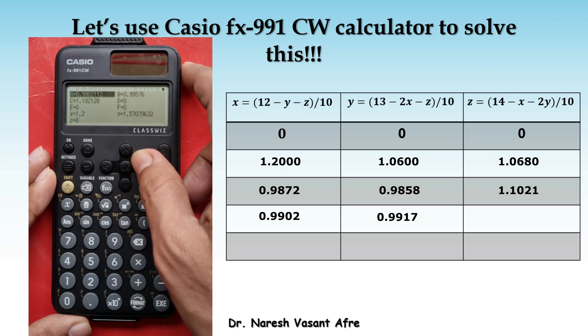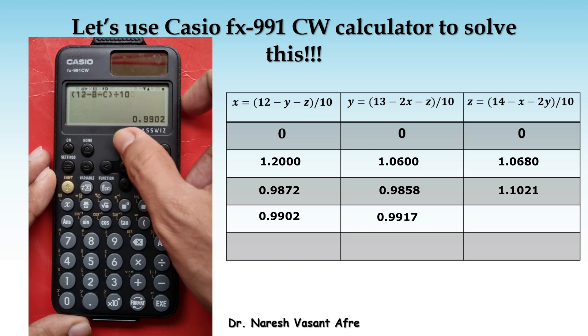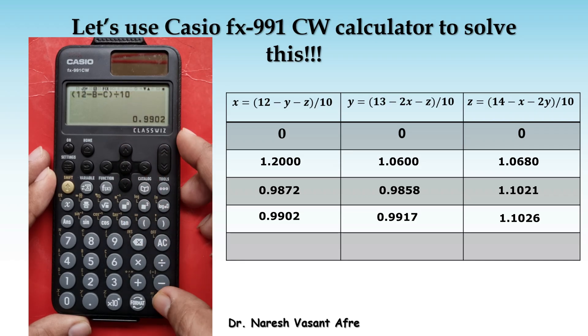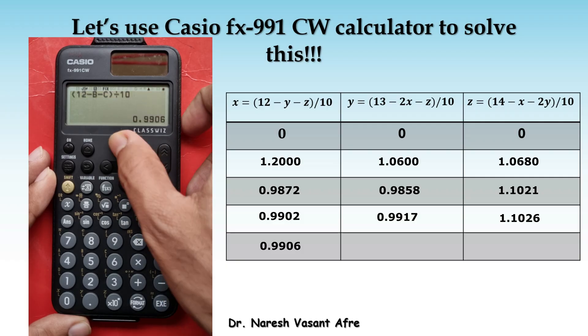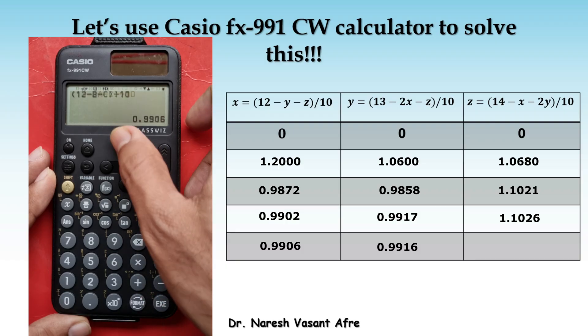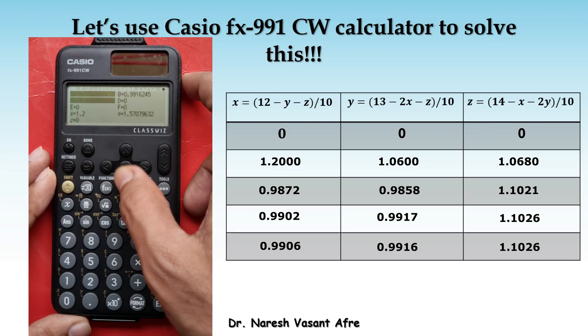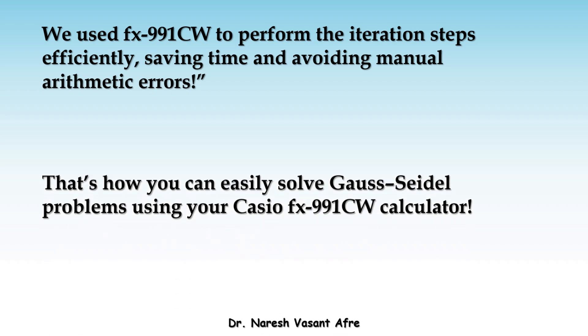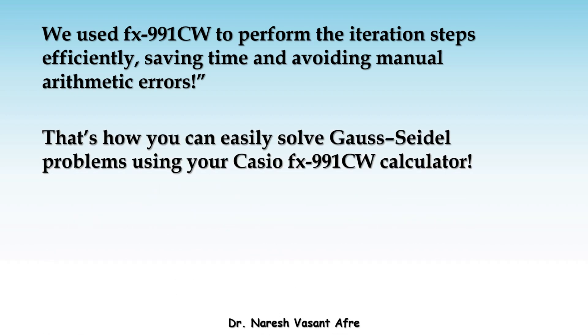We can do this for as many iterations as we want. And we will stop this when two consecutive iterations are giving the same value. So we used FX991CW to perform the iteration steps efficiently. Saving time and avoiding manual arithmetic errors. That's how you can easily solve Gauss Seidel problems using Casio FX991CW calculator.